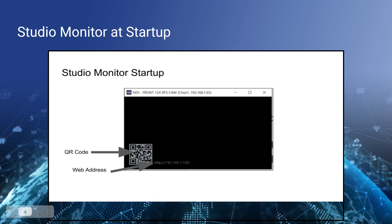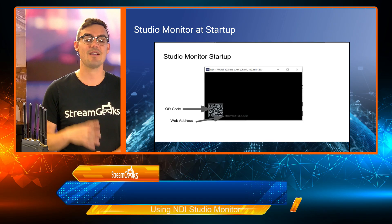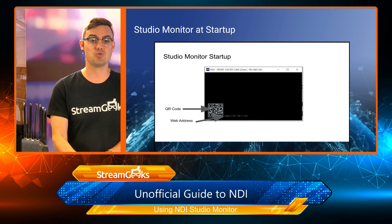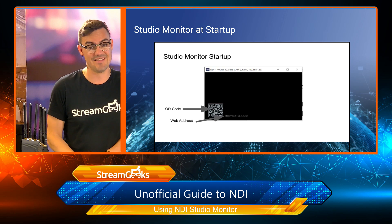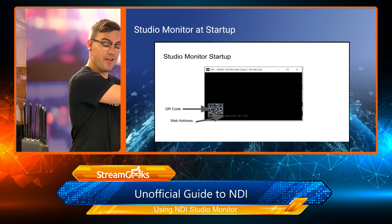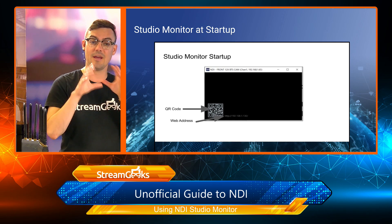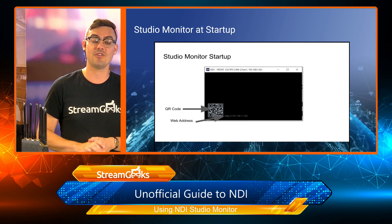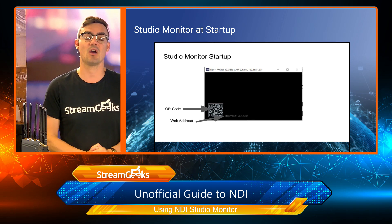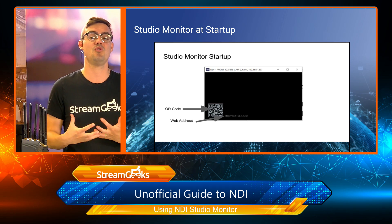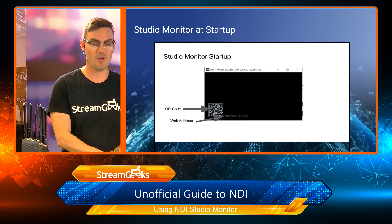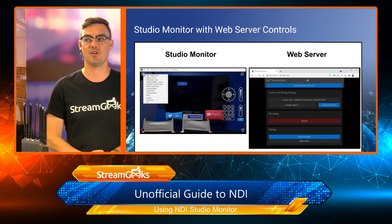When Studio Monitor starts up the first time it opens, a QR code is going to pop up that you can scan with your phone and take remote control of Studio Monitor. That IP address or QR code — you can type the IP address into a web browser or scan the QR code — will take you to the remote control area of Studio Monitor.